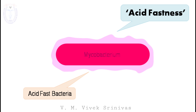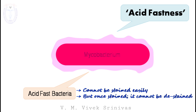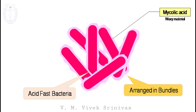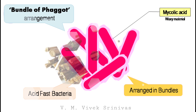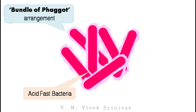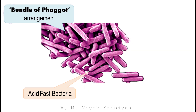In general, the acid fast bacteria cannot be stained easily. However, once stained, it cannot be destained. These acid fast bacteria are generally arranged in bundles. This is due to the presence of the waxy material — the mycolic acid — over the mycobacterial surface. Ultimately, this gives a bundle of faggot arrangement. The mycobacterium will have this type of arrangement. So, the arrangement of the acid fast bacteria is called the bundle of faggot arrangement.